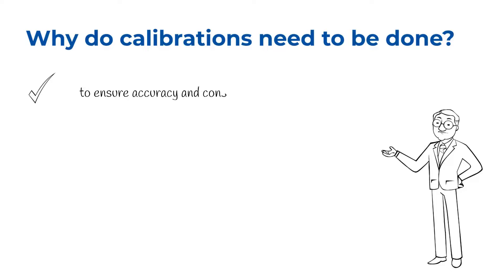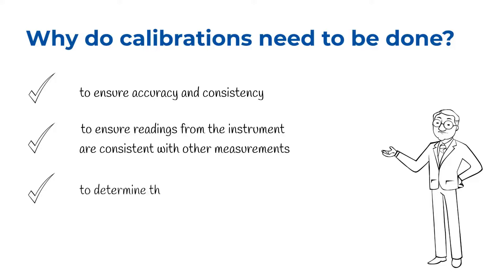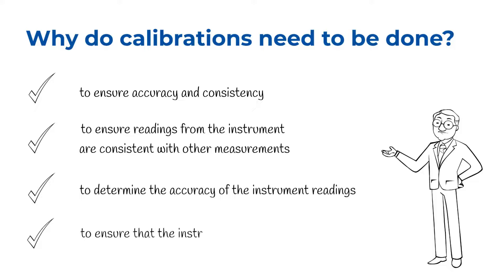The four most common reasons why calibrations are necessary are: to ensure accuracy and consistency, metrological traceability must be established and demonstrated, to ensure readings from the instrument are consistent with other measurements, and to determine the accuracy of the instrument readings by taking into account any potential sources of error.